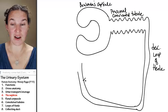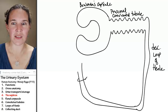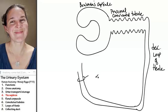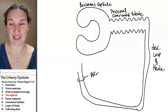Holy crud. And the descending loop of Henle becomes, that's kind of crazy right there, but it becomes the, what do you think this is?